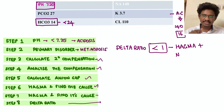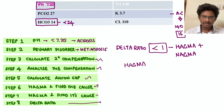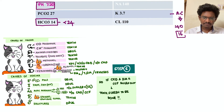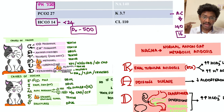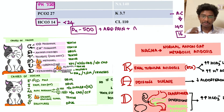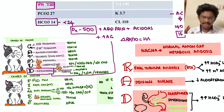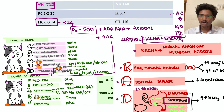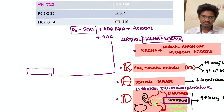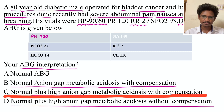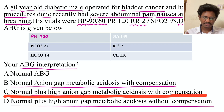Why is HAGMA and NAGMA coexisting? For HAGMA: using the MUDPILES mnemonic — this patient has dextrose of 520 (high), severe abdominal pain, nausea, and rapid Kussmaul's breathing — all characteristic of diabetic ketoacidosis. For NAGMA: the patient had bladder cancer with diversion procedures done — this is a known cause of normal anion gap metabolic acidosis. Both are coexisting, confirming the answer: NAGMA plus HAGMA with compensation.